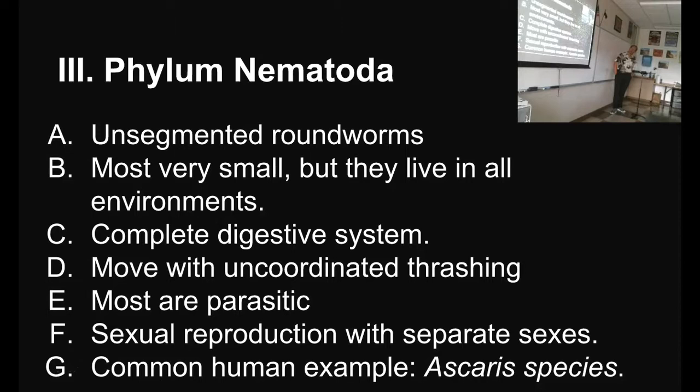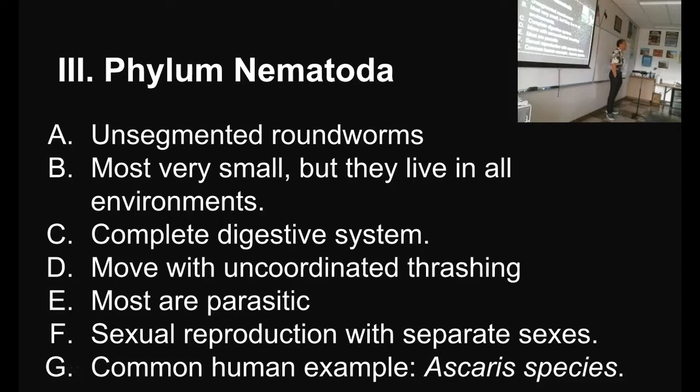Common human examples include Ascaris. The Ascaris worm — let me get it straight — lives in your gut. You poop out the eggs, and through bad hygiene you eat them. The eggs hatch into little larvae in your upper GI, go through your body wall, and wind up in your blood.